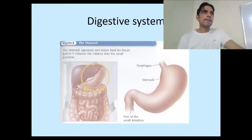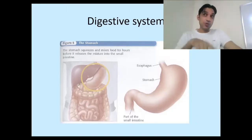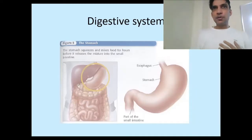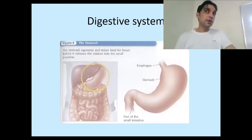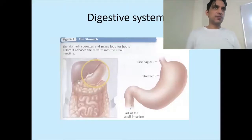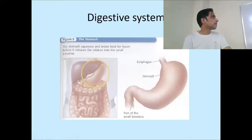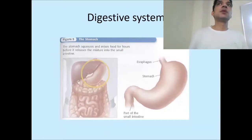The small intestine is the place where the supportive organs of the digestive system start doing things. There are two supporting organs: the liver and the pancreas. The pancreas produces insulin to regulate carbohydrate metabolism, but it also produces another chemical called pancreatic juice. That pancreatic juice travels into the small intestine through a vessel called the pancreatic duct.